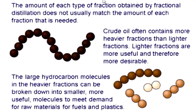The lighter fractions — gasoline, naphtha, kerosene, and diesel oil — are more useful and therefore more desirable. We want more of the lighter fractions and less of the heavy fractions. The large hydrocarbon molecules in the heavier fractions can be broken down into smaller, more useful molecules to meet demand for raw materials for fuel and plastic.